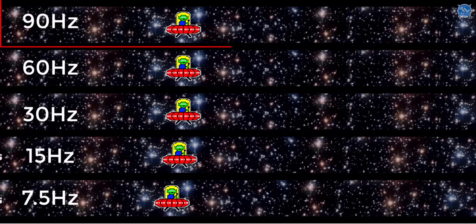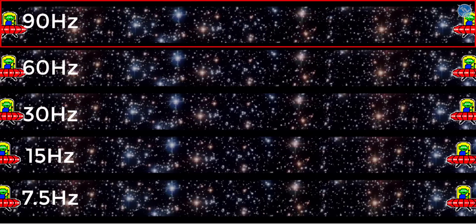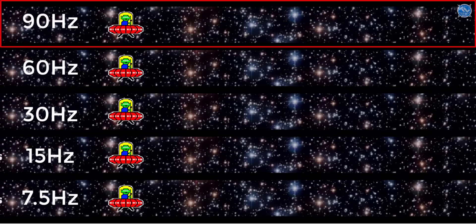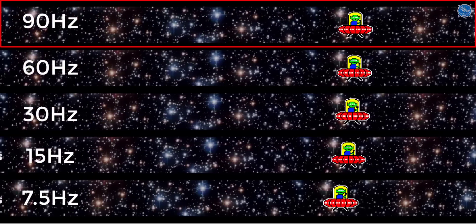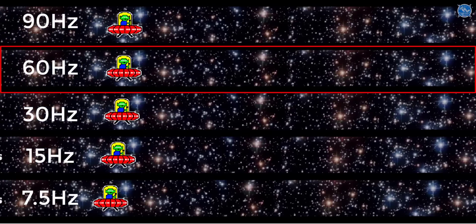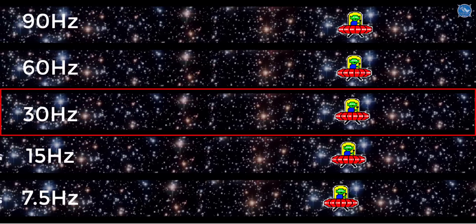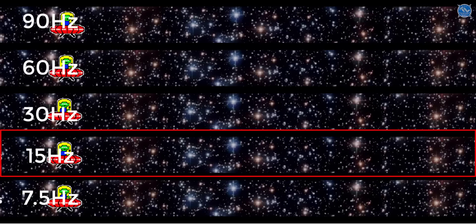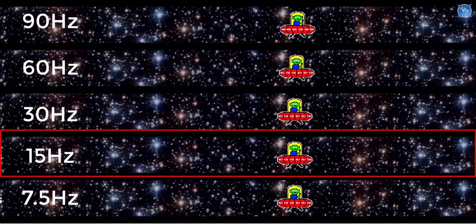If you look at the example, at a higher refresh rate — say 90Hz — you get a smoother display experience. At 60Hz, the refresh rate can drop a little bit, down to 30Hz and 15Hz, which affects smoothness.